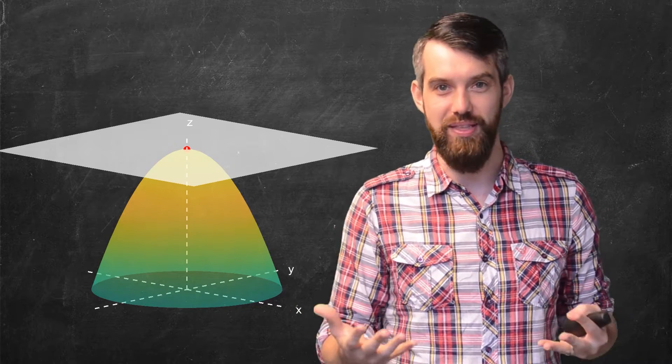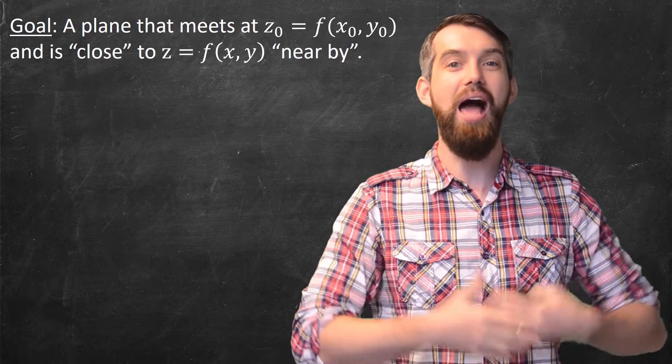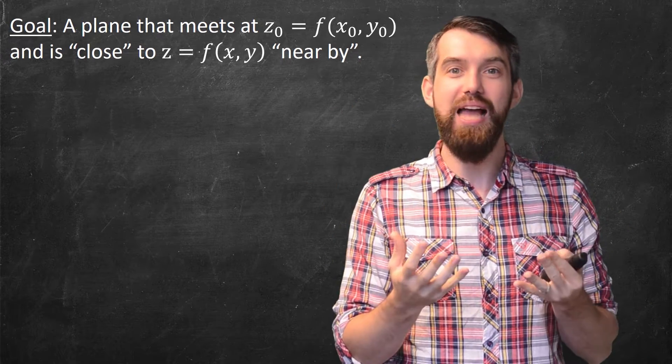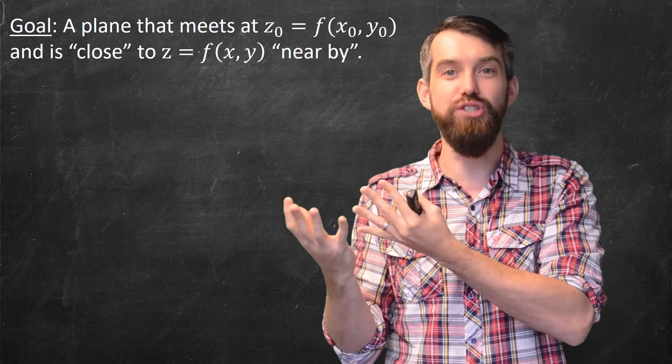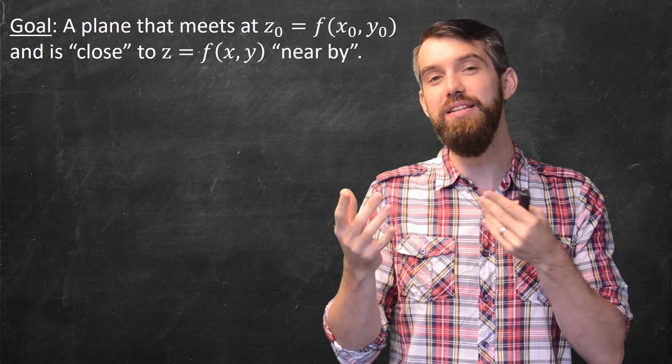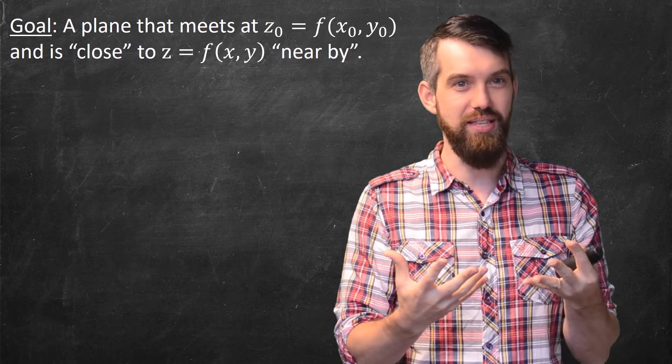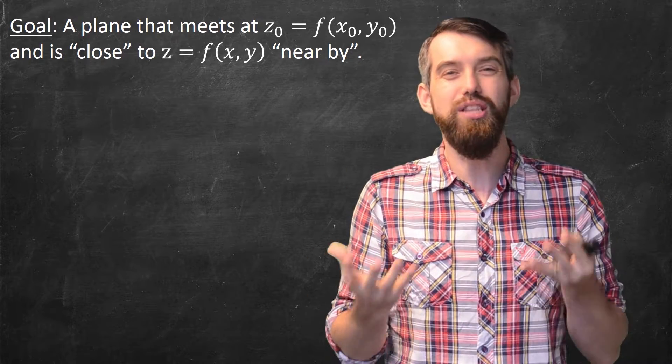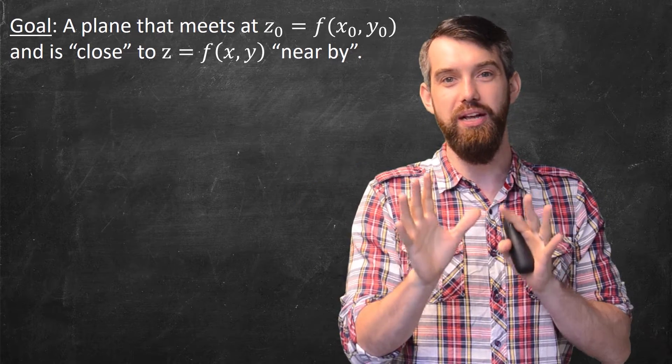So how do we find this? Well, let's begin with the goal. A loose sense of my goal is I'm looking for some plane. I'm asking two things. I'm first asking that the tangent plane and the graph of my function that they meet at the specific point x0, y0, and z0. And then, secondly, I'm asking that nearby that point, that the tangent plane is close in some sense. It's close to the graph of the function, but what exactly I mean by that, let's put a pin in it, and we're going to come back to it later.